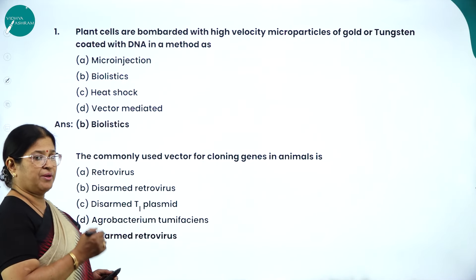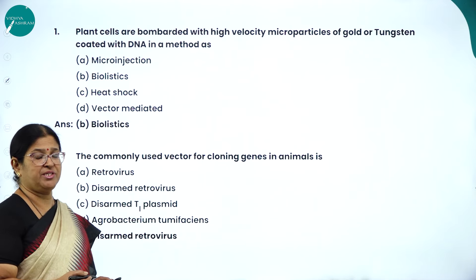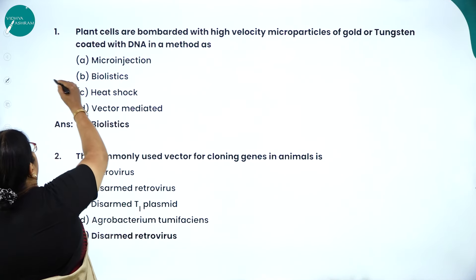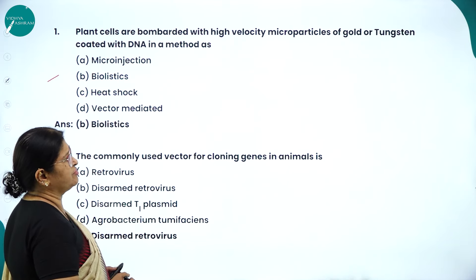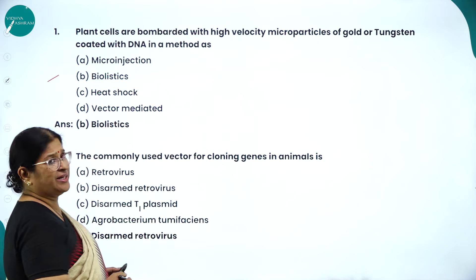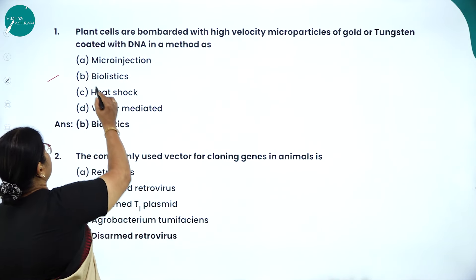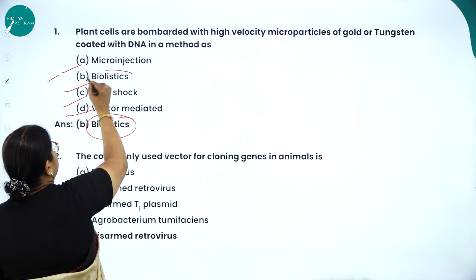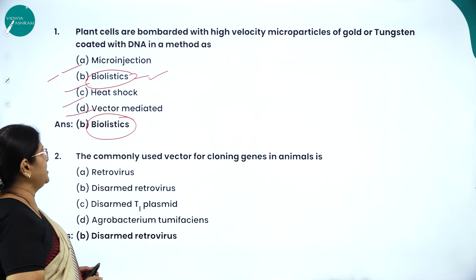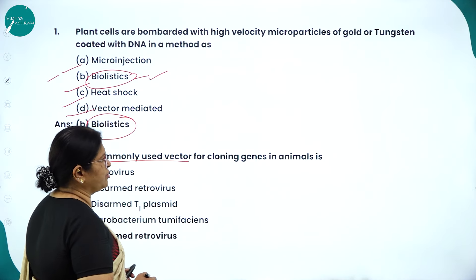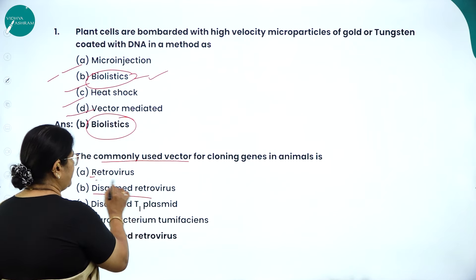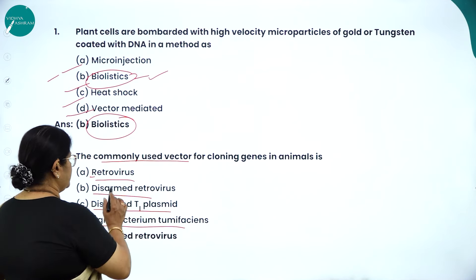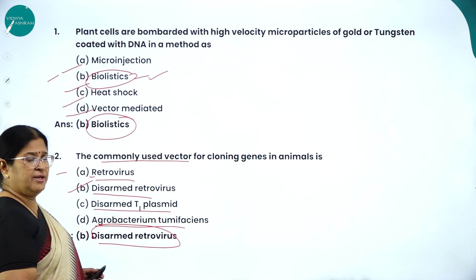Moving on to one-marker MCQ questions from this chapter. Plant cells bombarded with high-velocity microparticles of gold or tungsten coated with DNA — this method is called biolistic. The commonly used vector for cloning genes in animal cells is disarmed retrovirus — option B is the right answer.